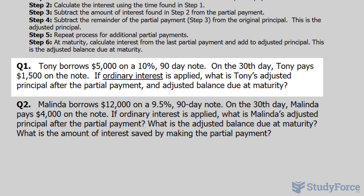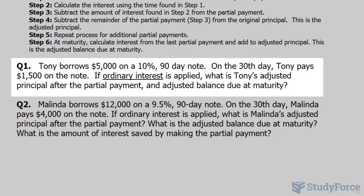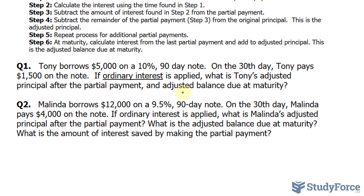The very first question is: Tony borrows $5,000 on a 10%, 90-day note. On the 30th day, Tony pays $1,500 on the note. If ordinary interest is applied, what is Tony's adjusted principal after the partial payment and adjusted balance due at maturity? Ordinary interest is significant — it assumes 360 days per year as opposed to 365, and on that assumption every month has 30 days.